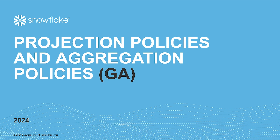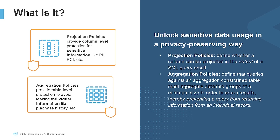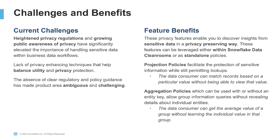Projection and aggregation policies are generally available. Projection policies dictate whether a column can be shown as the output of a SQL query, providing column-level security for sensitive information like PII and PHI. Aggregation policies are table-level protection that avoid leaking individual rows of data by defining the minimum size of a group for an aggregation. The challenge these policies solve is retaining the usability and analytical value of your data while maintaining the privacy of the individuals within your data.